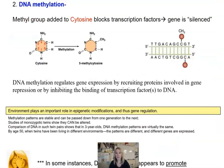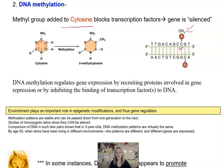Another way to affect gene expression is through DNA methylation. A methyl group is added to cytosine. In a simplified DNA molecule, you can see the cytosine with a methyl group added to it. If you have multiple cytosines all methylated, that region of DNA would be silenced — it would be very hydrophobic, transcription factors would not be able to bind it, and therefore those genes would not be expressed in that particular region.